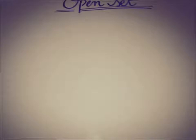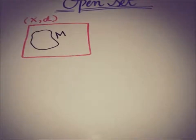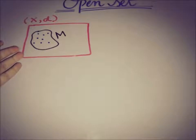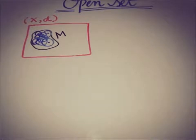Moving toward the definition of an open set in a metric space: we have a metric space (X, d), and if we take any subset of this metric space — let's call it M — this subset M of a metric space X is said to be open if it contains a ball about each of its points. That is, if we take random points in subset M, about each of those points we have an open ball, then M is said to be an open set.